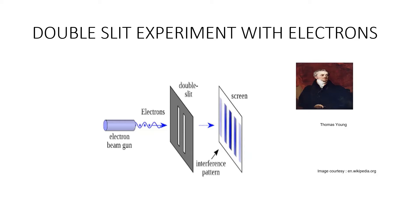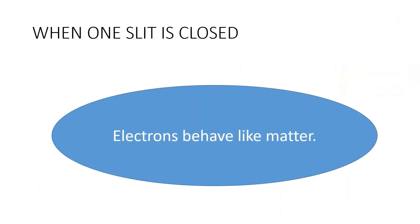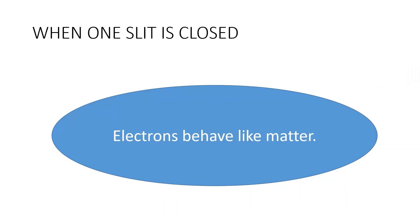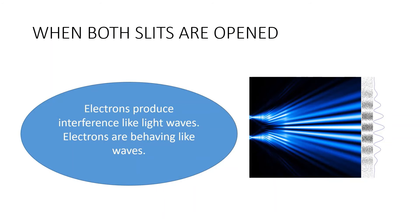The first mystery of quantum mechanics comes when both slits are opened. We can see interference patterns on the screen, which is same as that of light, and the electrons are behaving like waves.